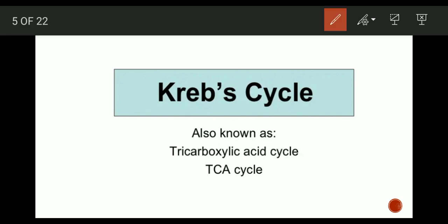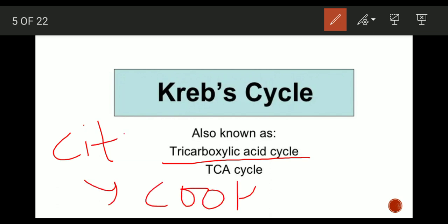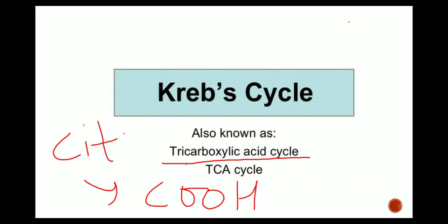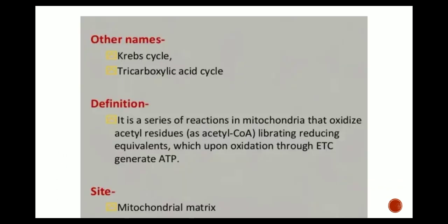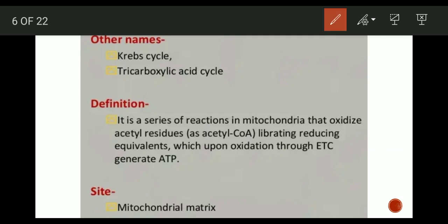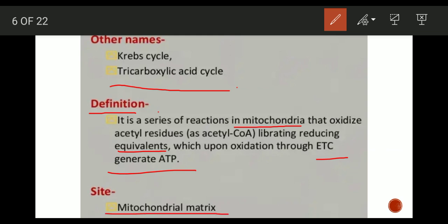Krebs cycle is also known as the tricarboxylic acid cycle because the first metabolite formed is citrate, and citrate has three carboxylic acid groups — so it is called the TCA cycle. By definition, it is a series of reactions in the mitochondria that oxidize acetyl residues as acetyl coenzyme A, liberating reducing equivalents which, upon oxidation through the electron transport chain, generate ATP. Its site is the mitochondrial matrix.